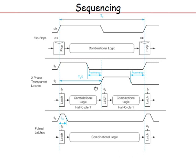The latch gives the benefit of time borrowing. In a flop-based design, each stage must finish its job within hard clock edges. In a latch-based design, if a stage hasn't finished when phi-1 opens, it is okay — the latch becomes transparent and the data can flow through a little later, borrowing time from the next pipe stage. This makes timing analysis complex but gives flexibility. Latches are more tolerant to clock skew because of this transparency.